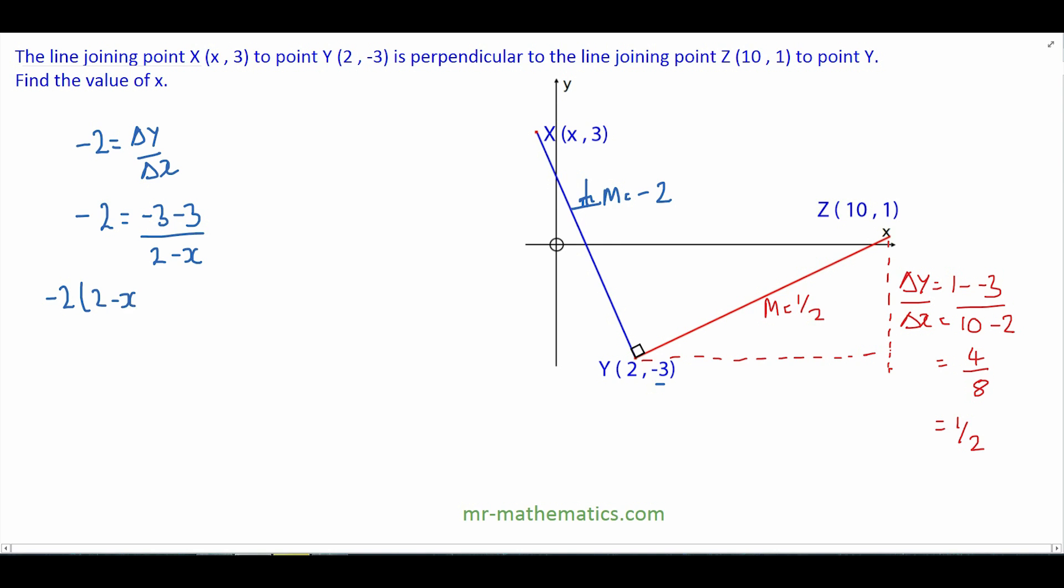Now we can solve this equation. Multiply both sides by 2 minus x, and that will be negative 6. Expand the brackets: negative 4 plus 2x equals negative 6. Add 4 to both sides.